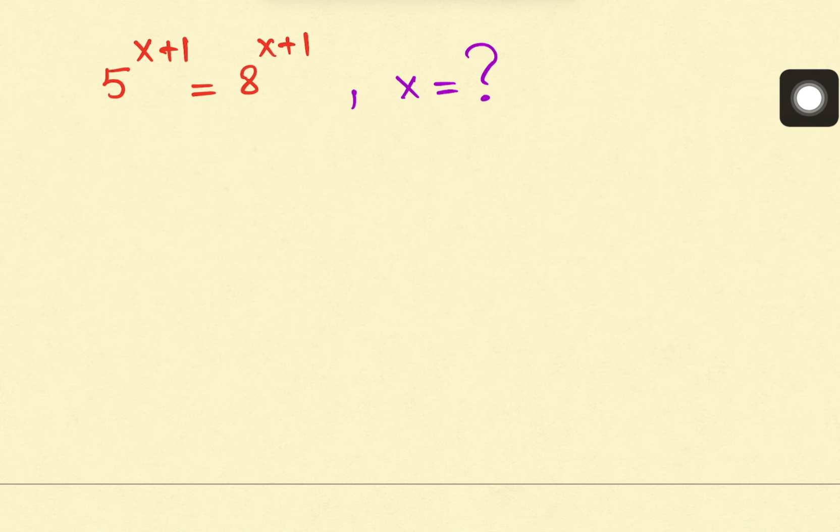In 30 seconds, first, we must know one exponent rule. This exponent rule is p raised to x plus 1 equals p raised to x multiplied by p raised to 1.